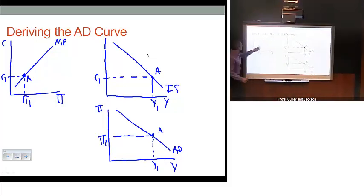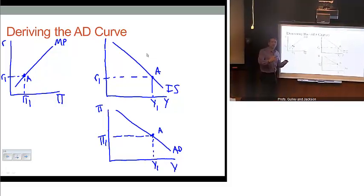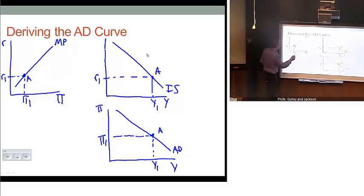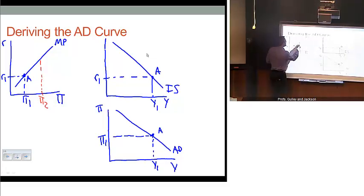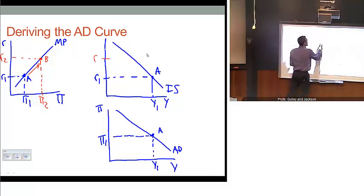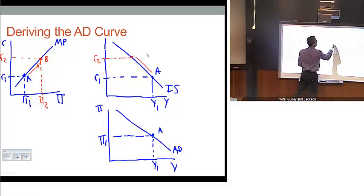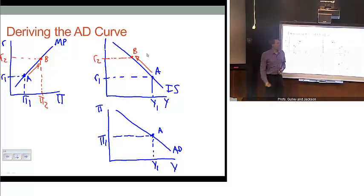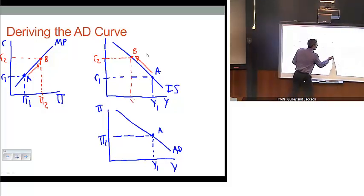If we think about our MP curve — suppose hypothetically we have an increase in the inflation rate to some arbitrary level, PI2. At PI2, the Fed is going to increase its interest rate policy instrument through the MP curve, so we move straight up along that curve as a result of the change in the current inflation rate. As a result of the higher interest rate going from R1 to R2, that results in a movement along the IS curve. At that higher real interest rate R2, we simply move up along our IS curve, and we have a new goods market equilibrium level of output demanded at Y2.